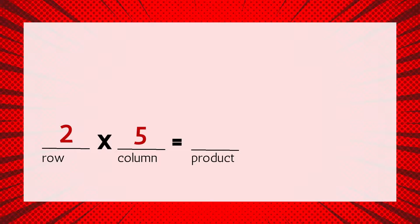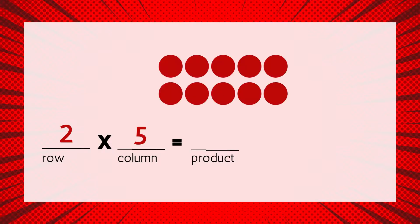Let's look at another way we could use arrays to help us solve multiplication equations. This equation has the factors 2 and 5, and we're trying to find the product. You can quickly find the product by drawing an array. Remember, the first factor is 2, so there should be 2 rows in your array. The second factor is 5, so there should be 5 columns. Your array should look like this — 2 rows of 5.